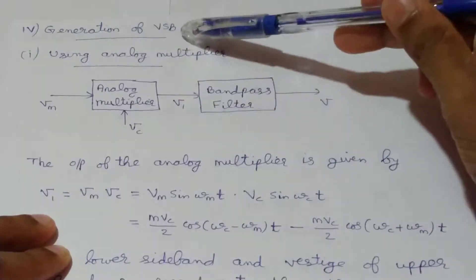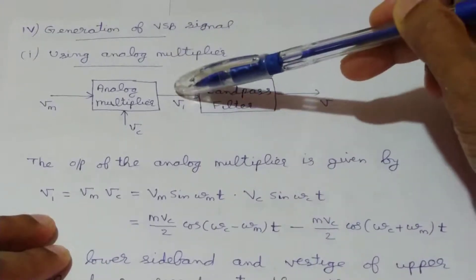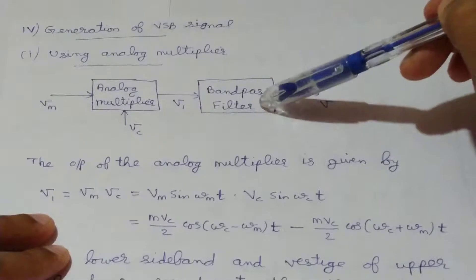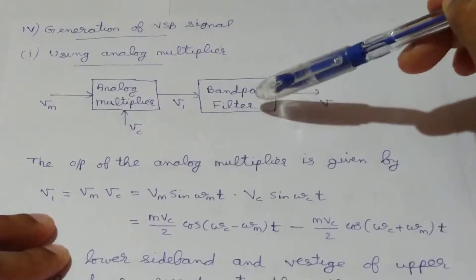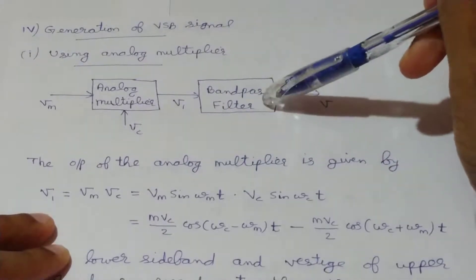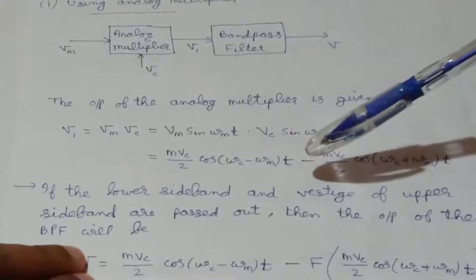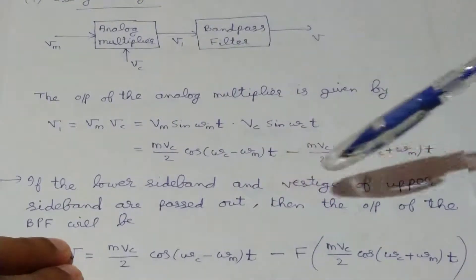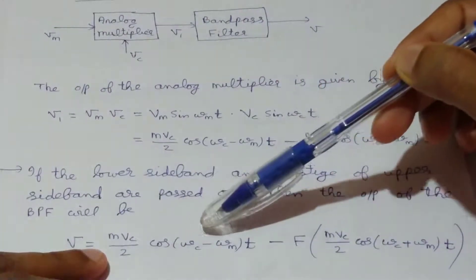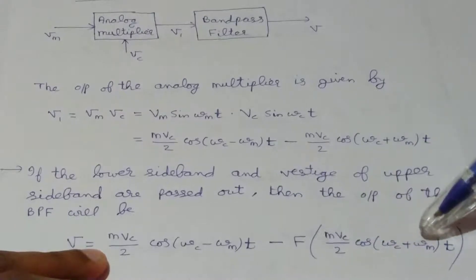In vestigial sideband modulation technique we will transmit one sideband completely along with a vestige of the other sideband. For that selection we are using this bandpass filter section. By properly choosing the cutoff frequencies for this bandpass filter we can select the required sideband and a vestige of the other sideband. If the cutoff frequencies are selected so that the lower sideband and vestige of the upper sideband are passed, then the output V = (MVc/2)cos((ωc − ωm)t) minus a fraction of (MVc/2)cos((ωc + ωm)t).